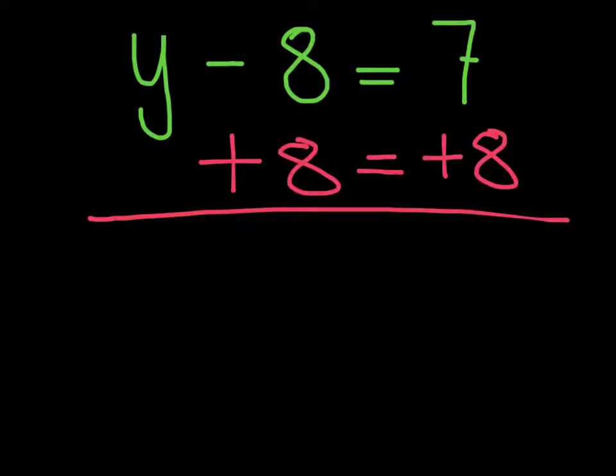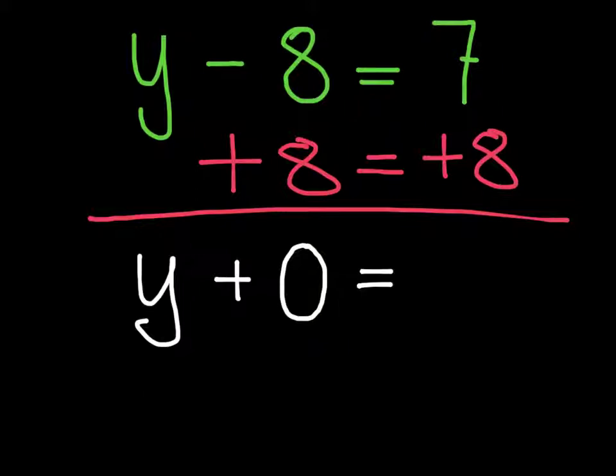When I perform this operation to both sides of my equation, on the left side, minus 8 plus 8 can be simplified to 0. On the right side of the equation, 7 plus 8 can be simplified to 15.